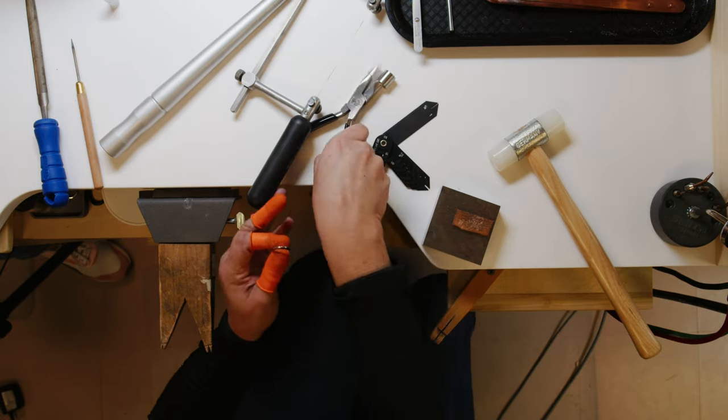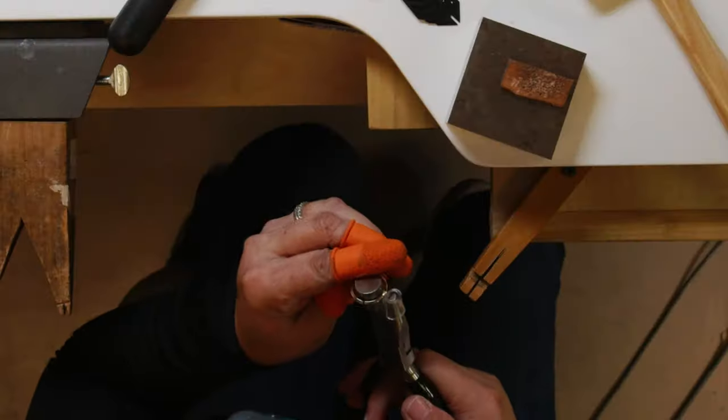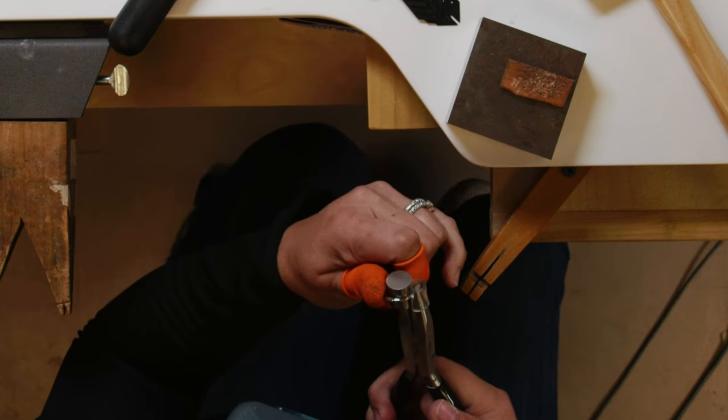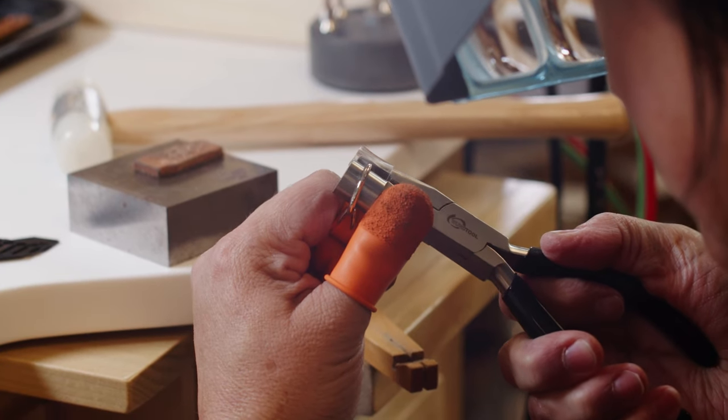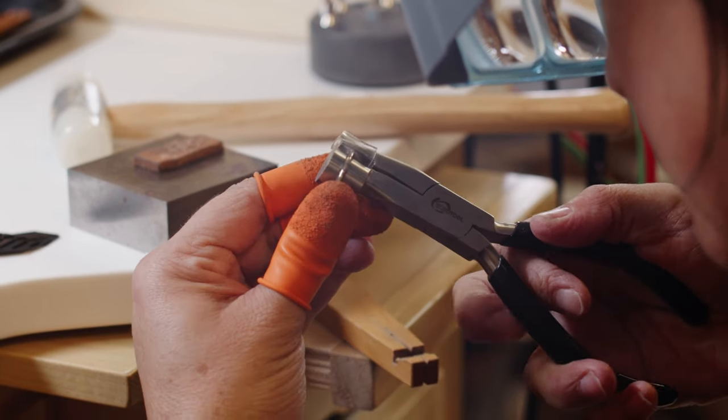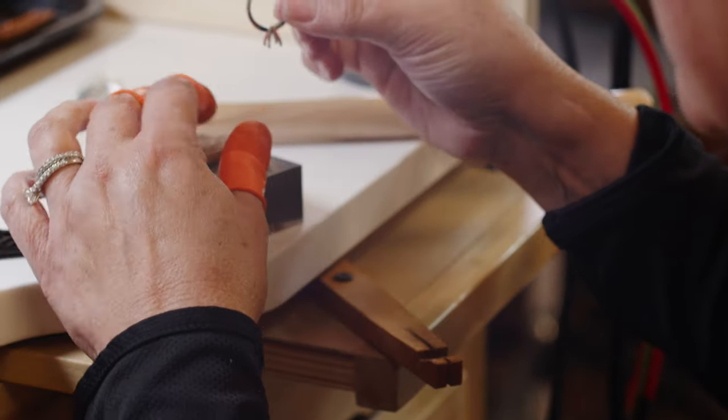Okay, next step, we're going to close this gap. Now I'm going to use my ring-forming pliers to bend the ring shank to close the gap. Get it as close as you can.